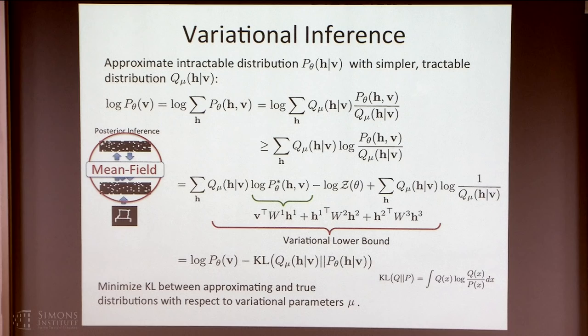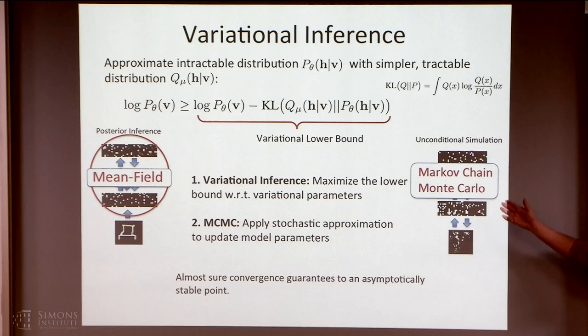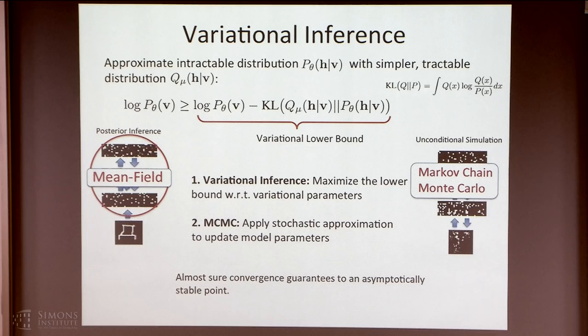If the posterior is truly multimodal, this procedure will select one mode and make it more probable. As you're training, the model will find a solution such that your approximation to the posterior is pretty close to the true posterior, but you might sacrifice a little log likelihood because you're forcing a multimodal posterior to be unimodal. This is almost like an EM algorithm — in the E-step, you're doing variational approximation; in the M-step, using stochastic approximation to update model parameters. Asymptotically, you converge to a stable point of the variational bound.